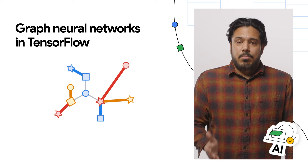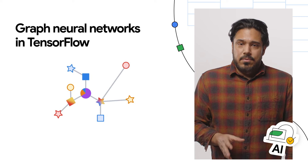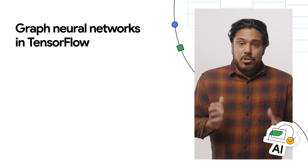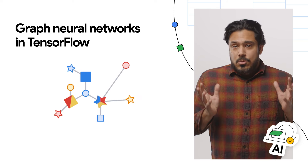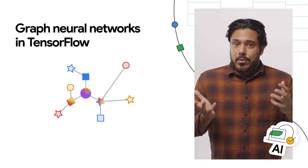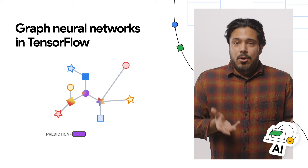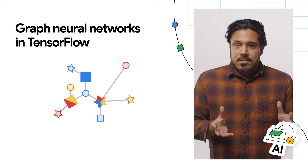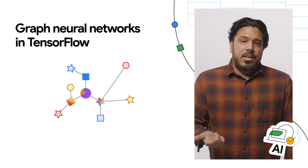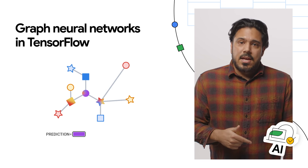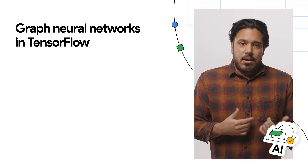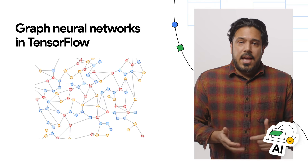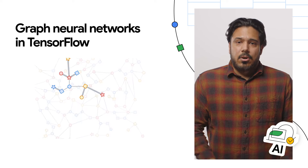It supports both modeling and training in TensorFlow, as well as the extraction of input graphs from huge data stores, so you can do cool things like predicting molecule reactions or predicting the topic of a research paper given its citations. Take a look at an example that uses TensorFlow GNN for just this use case by checking out the post, and learn all about building GNN architectures and getting started with the Colab demo.